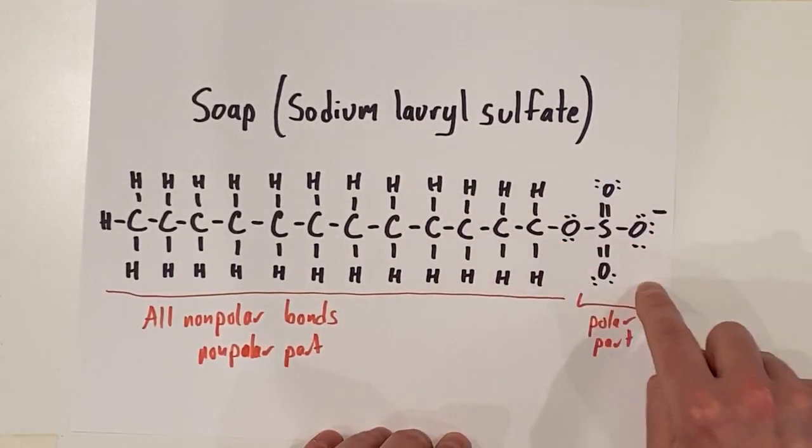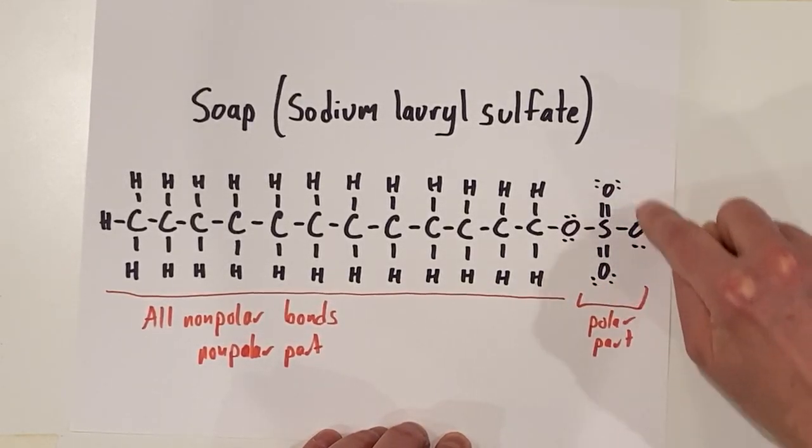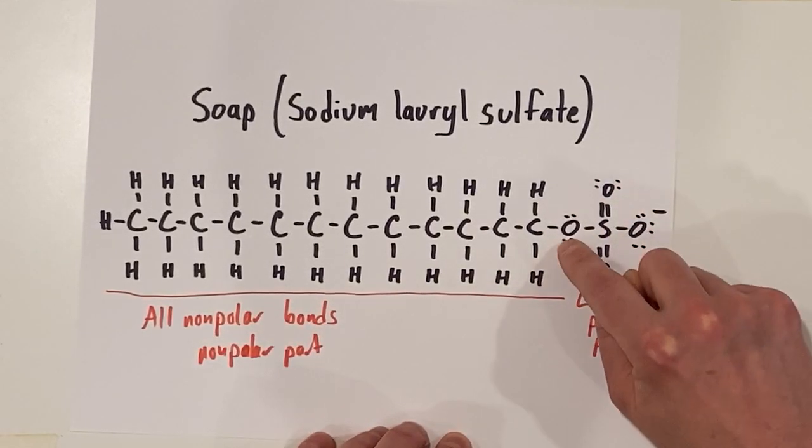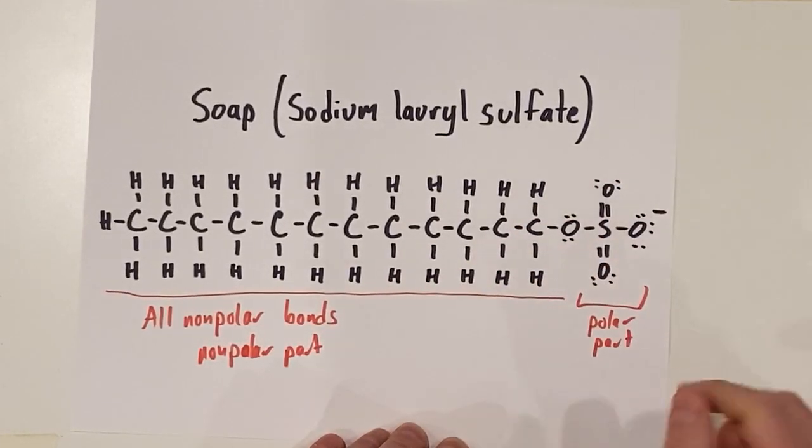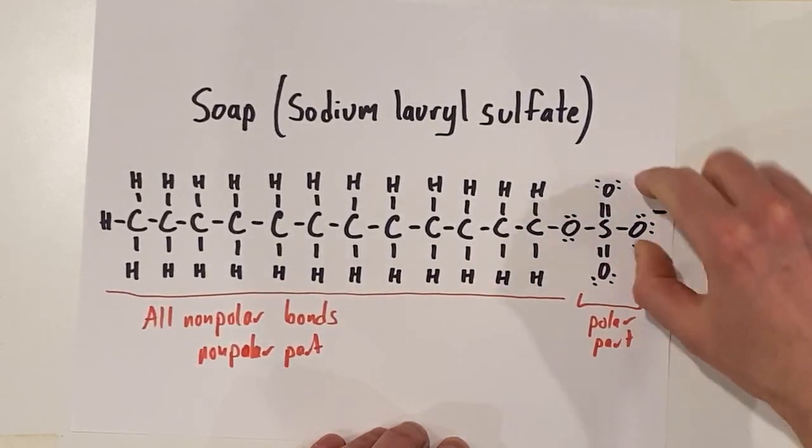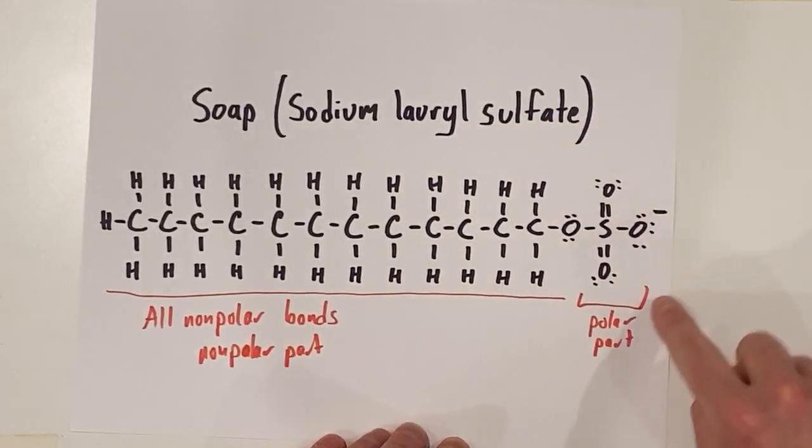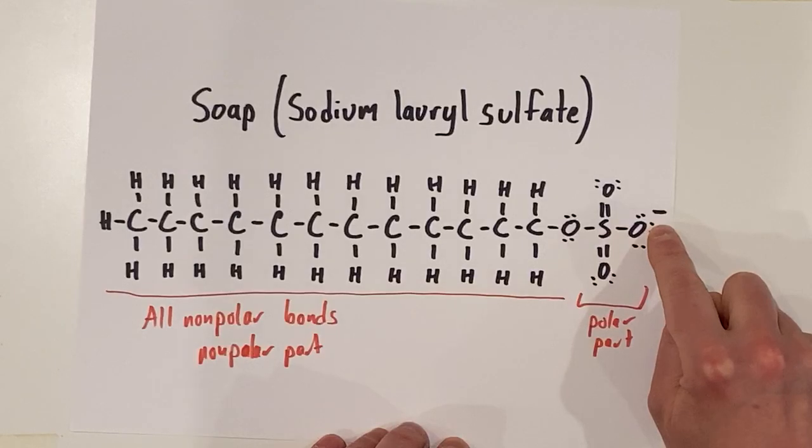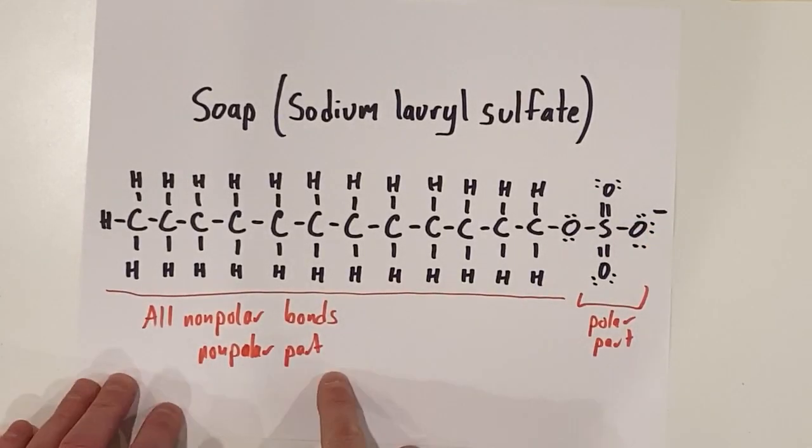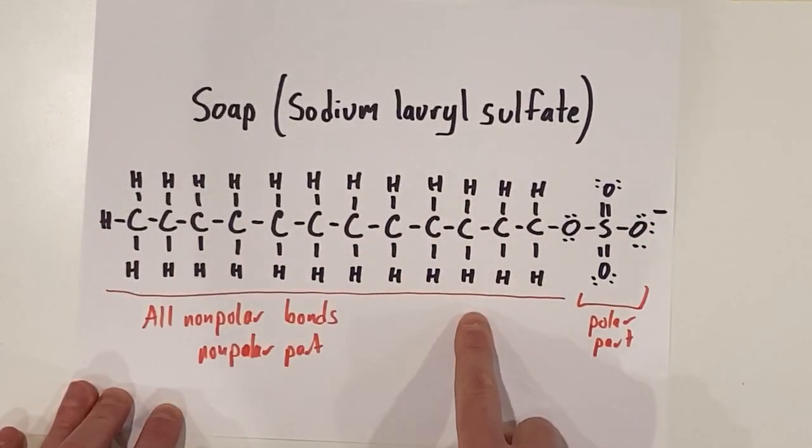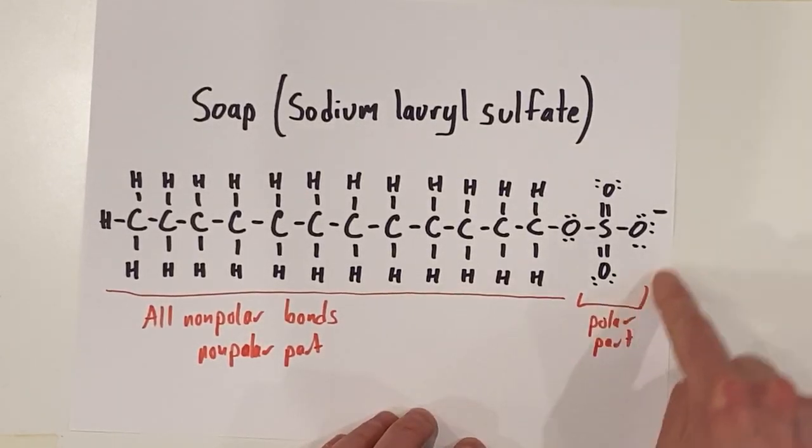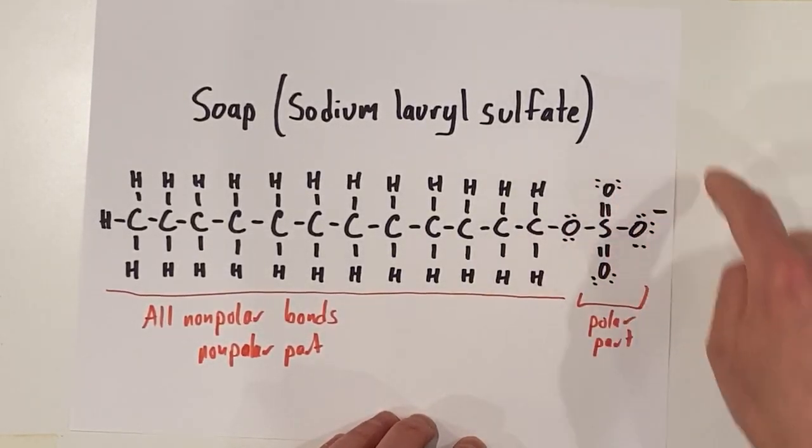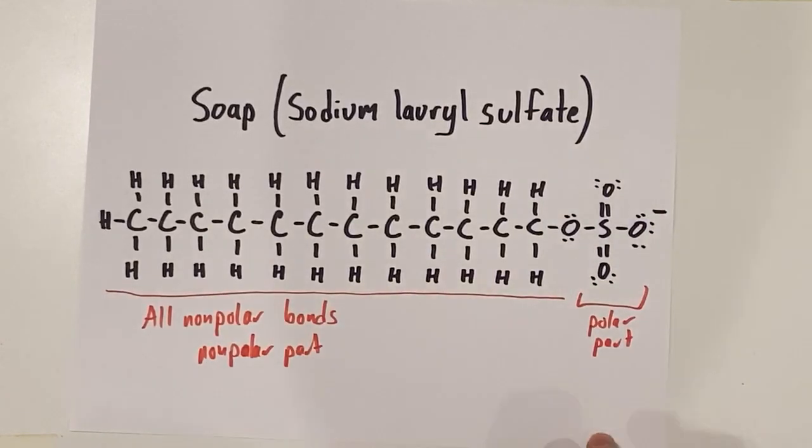On the other hand, we also have a polar part of soap. See all these oxygens over here? These oxygens are extremely electronegative. They're going to pull electrons towards themselves. And this part of the soap is going to have a negative charge. So we've got a non-polar part made up by all these non-polar bonds and a polar part of soap because we have these extremely electronegative atoms of oxygen on this end.